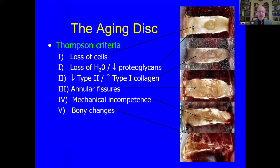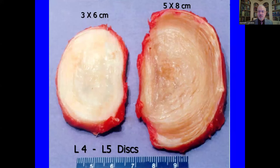The aging disc, leading to discogenic pain, goes through several stages of Thompson's criteria. Stage one involves loss of cells, tending to occur in individuals in their 30s to 40. Then there is a loss of water and proteoglycans, and a change from type 2 to type 1 collagen in the nucleus — type 1 collagen normally being characteristic of the annulus, not the nucleus in younger individuals. Annular radial fissures develop, followed by mechanical incompetence changes, and ultimately bony osteophytic changes.